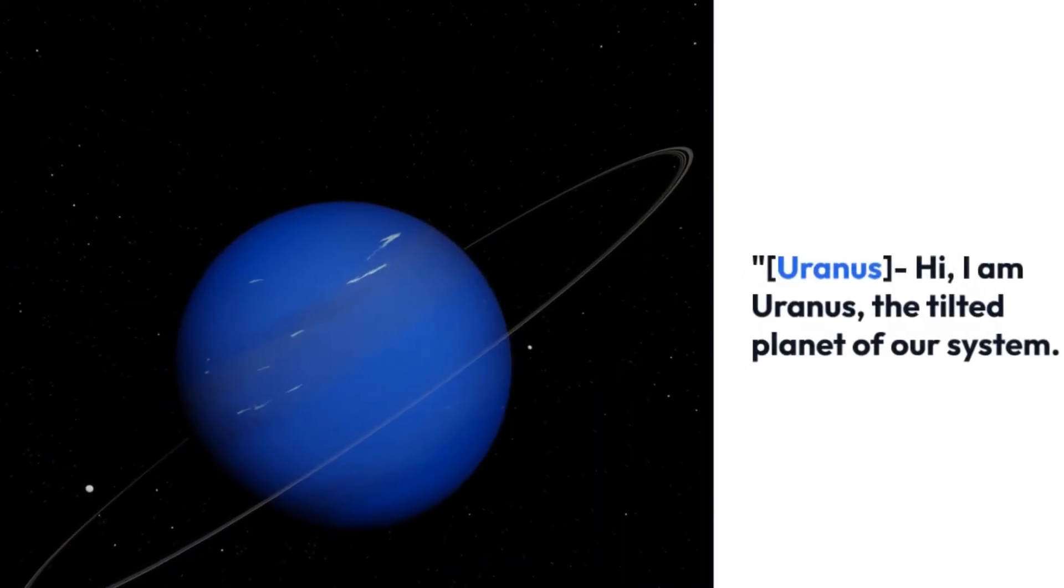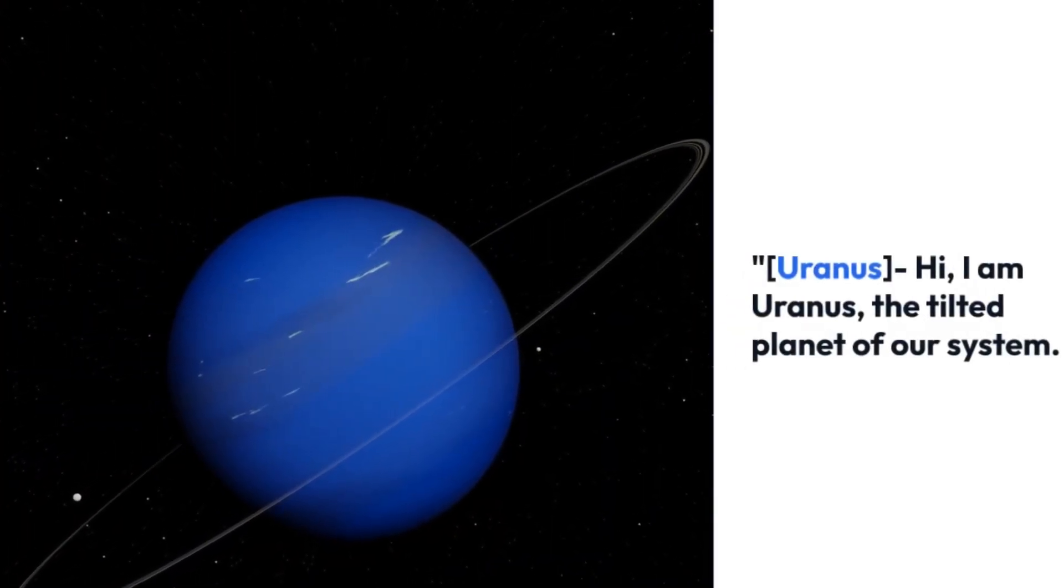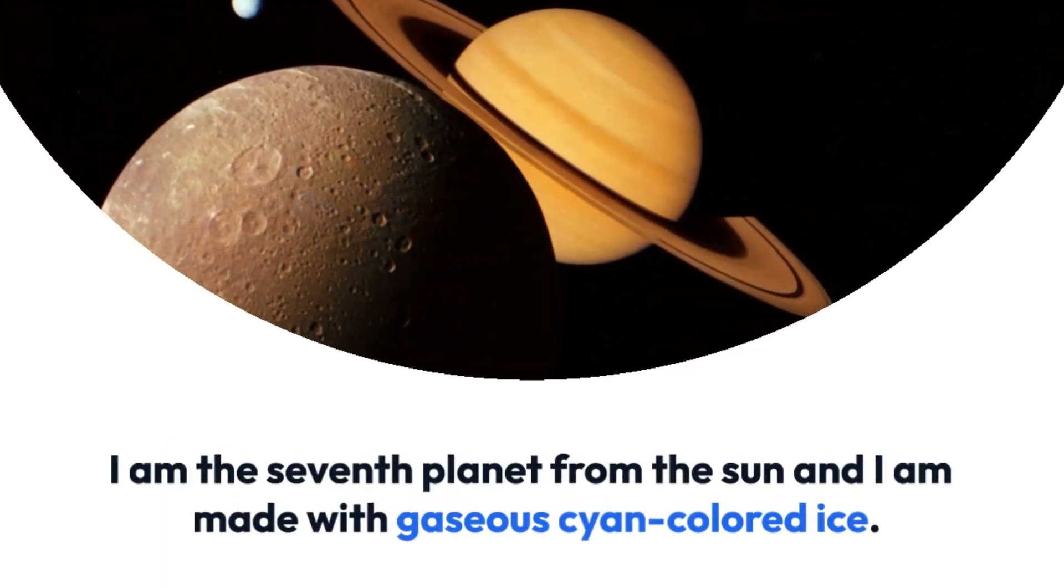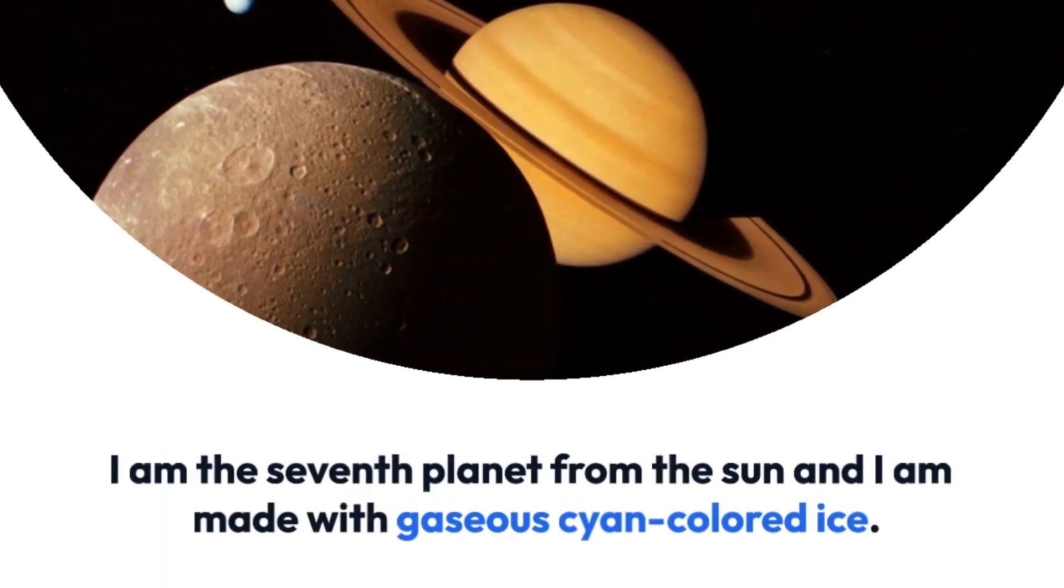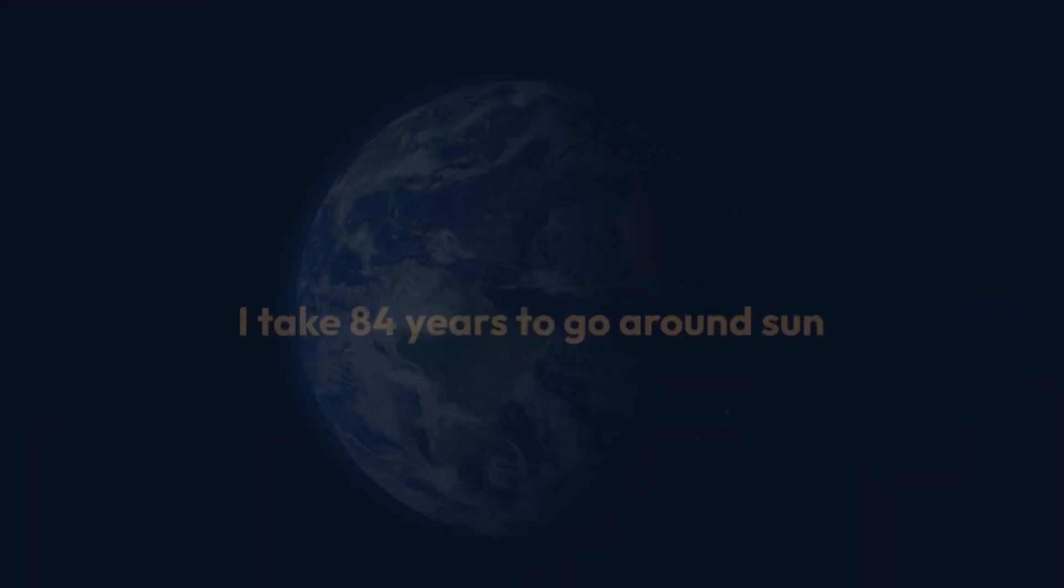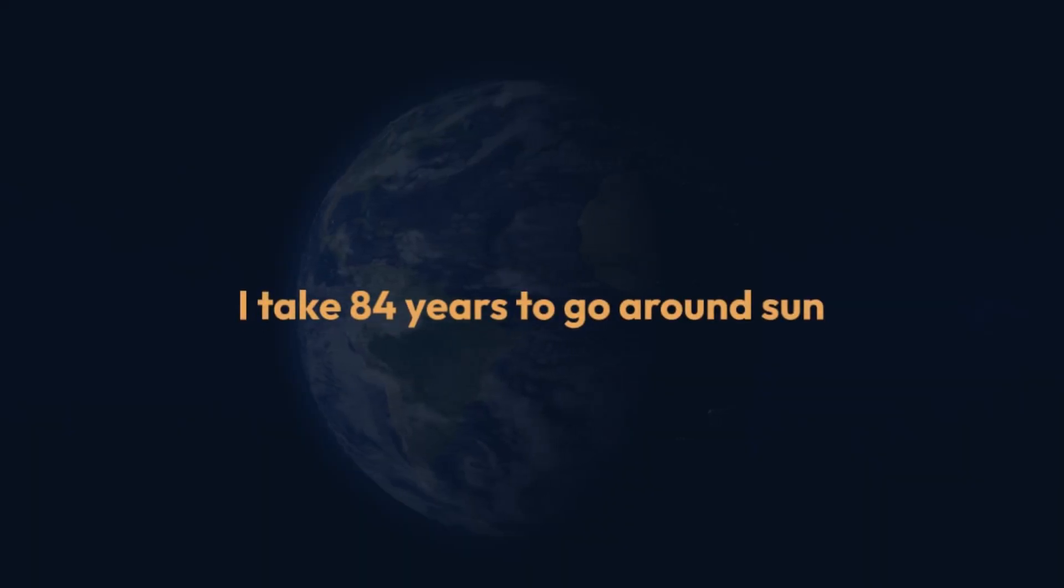Hi, I am Uranus, the tilted planet of our system. I am seventh planet from Sun, and I am made with gaseous cyan-colored ice. I take 84 years to go around the Sun.